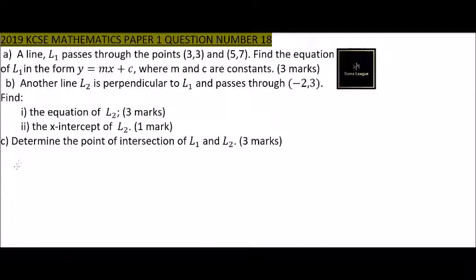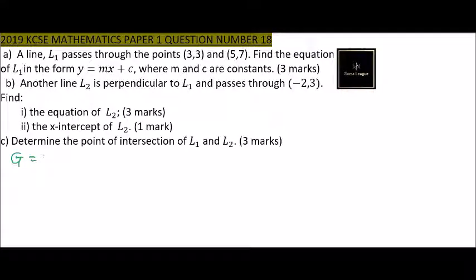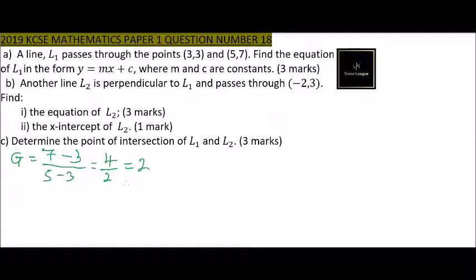To handle part A, you need to get the gradient of this line. The gradient is change in y over change in x. So the gradient equals (7 - 3) divided by (5 - 3), which gives us 4 divided by 2. So the gradient is 2.